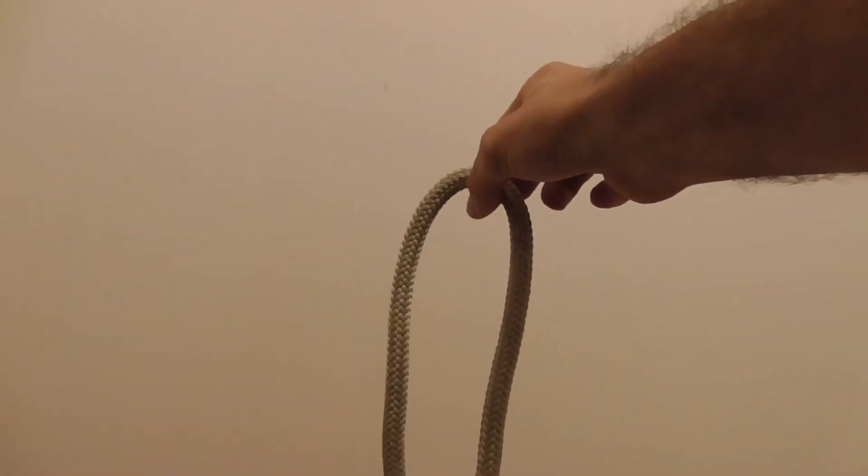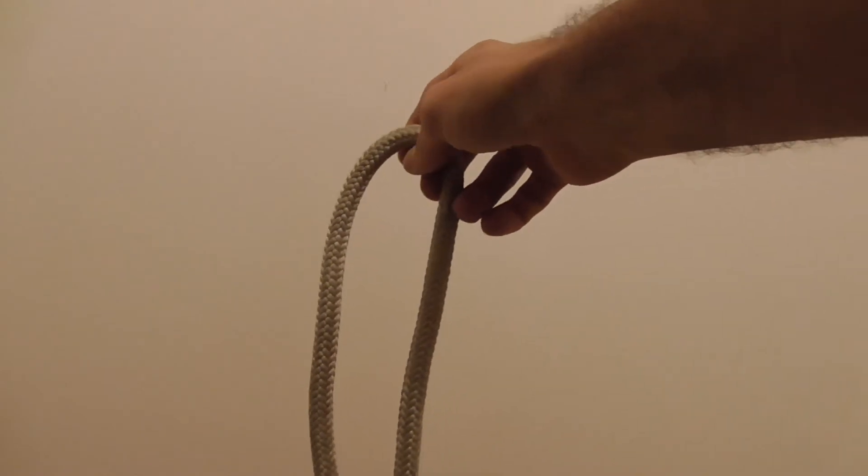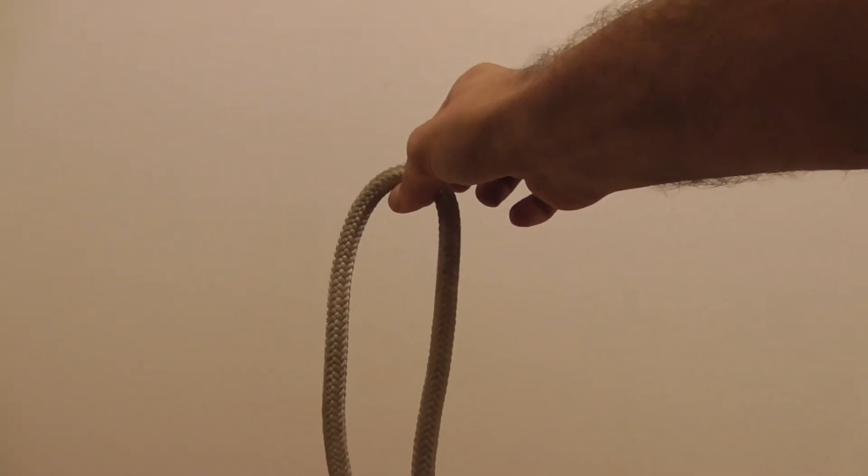Today we're going to learn how to tie the figure 8 stopper knot. This knot is used quite a lot as a safety knot in climbing, to prevent certain friction hitches from rolling out for instance.